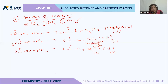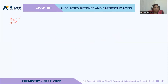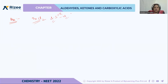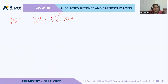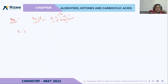Let's see the mechanism involved between carboxylic acid and SOCl2. In SOCl2, the sulfur atom is surrounded by oxygen and chlorine, both of which are more electronegative. So obviously, the sulfur will be electron-deficient. Since oxygen and chlorine are both more electronegative, sulfur needs electrons. Keeping this in mind, let's see the mechanism.